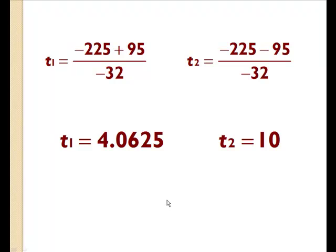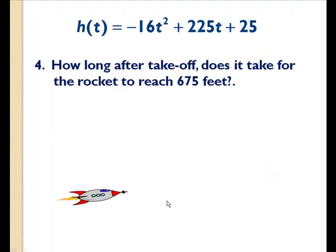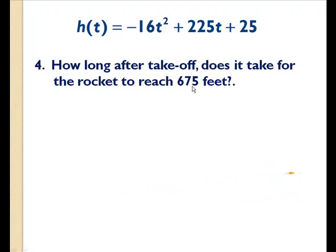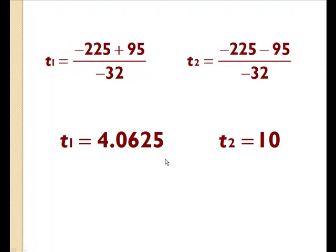So back to our original question. How long after takeoff does it take for the rocket to reach 675 feet? Well, the answer is 4.0625 seconds and 10 seconds. On the way up, it takes 4.0625 seconds, and on the way down, it takes 10 seconds to reach 675 feet.